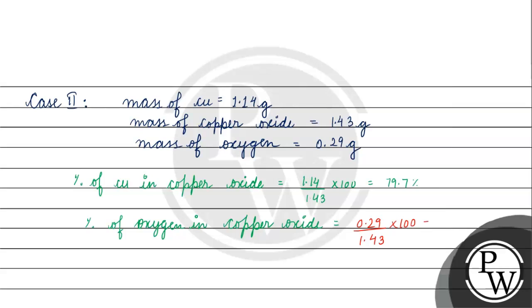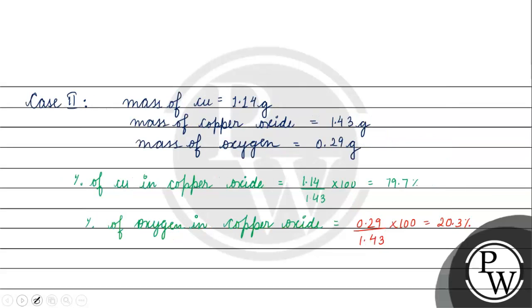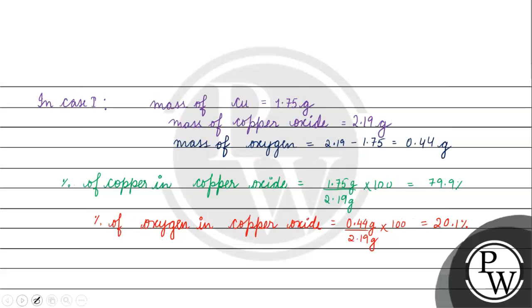In both cases we can see that copper percentage - in one we got 79.9% and in the second we got 79.7%. If we talk about the percentage of oxygen, in the second case is 20.3% and the first case is 20.1%.